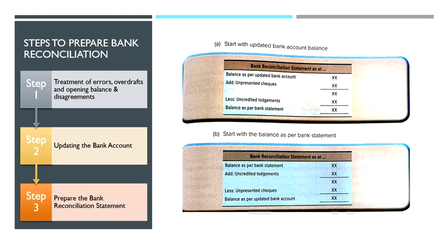And then step three, you're going to prepare the bank reconciliation statement using this format. First, you can use Format A — it starts with the updated bank account balance. Or, you can start with the balance as per bank statement. You would use this second method when the question does not give you the bank account balance.